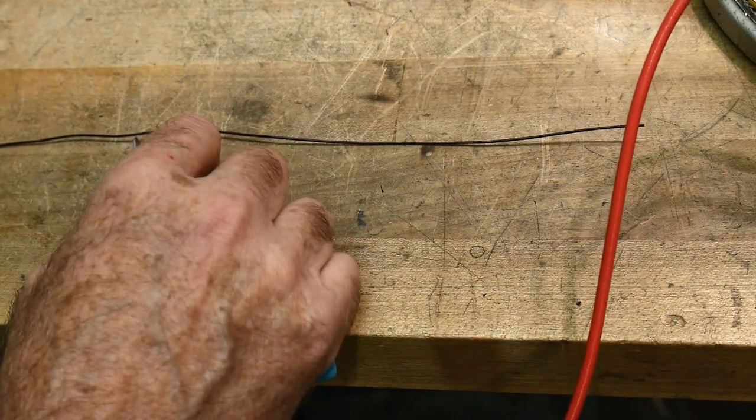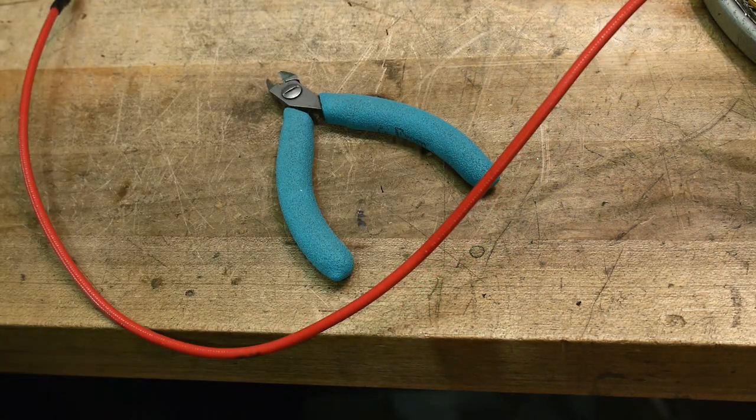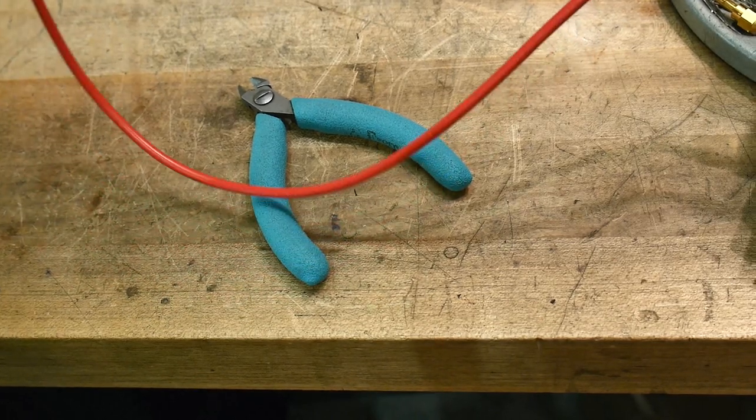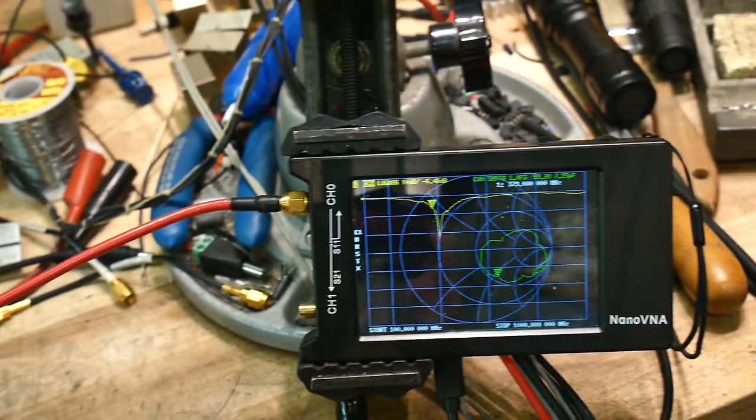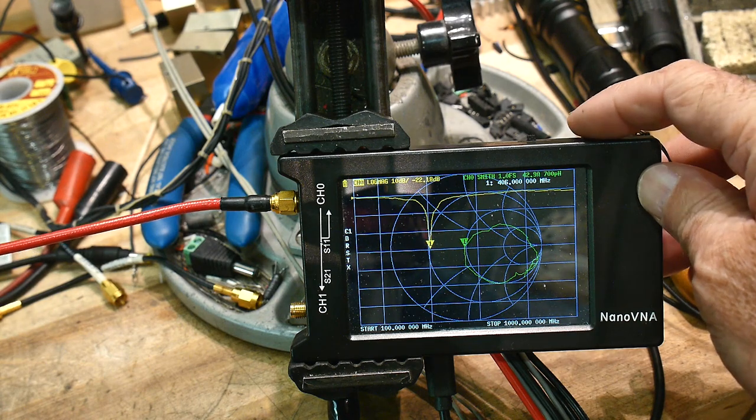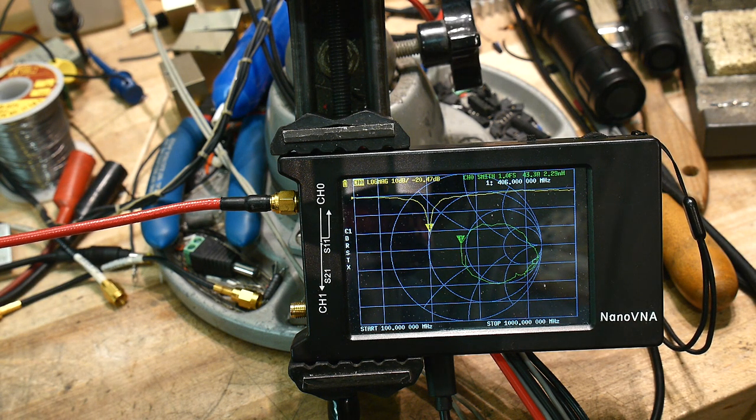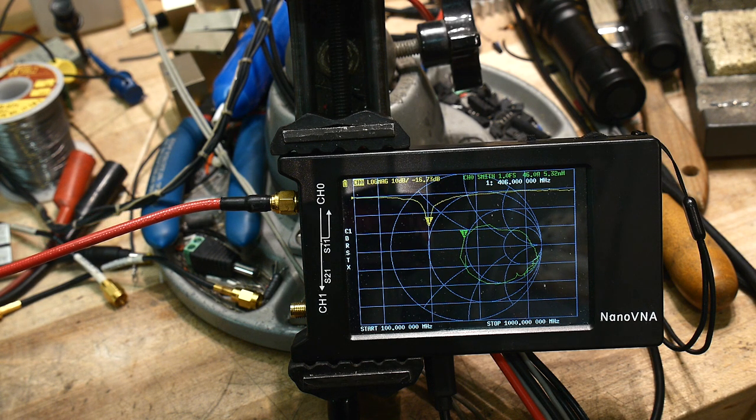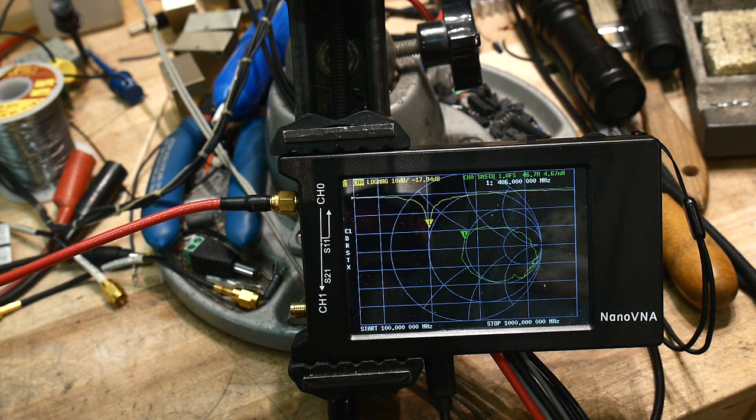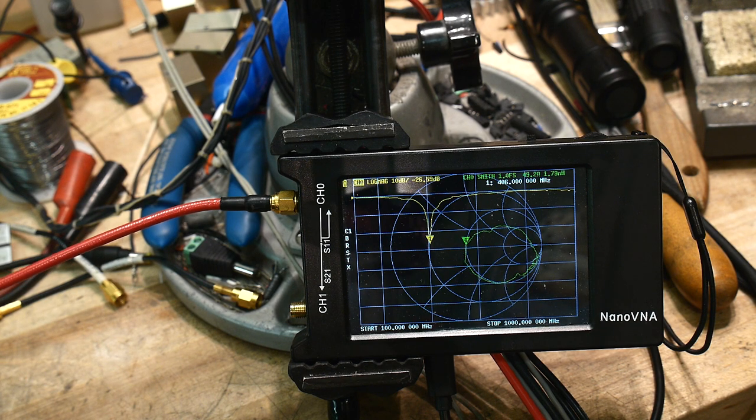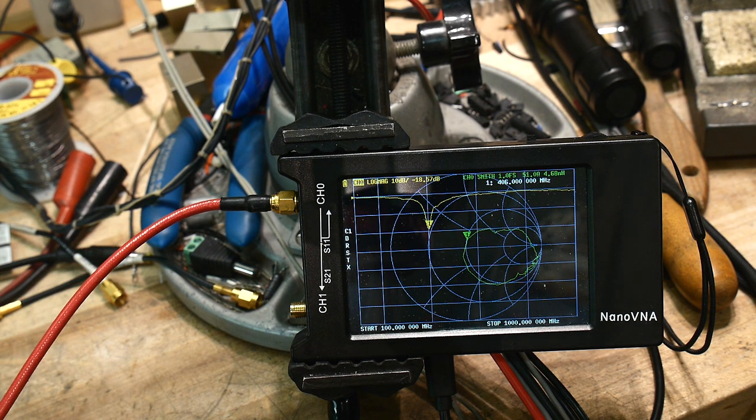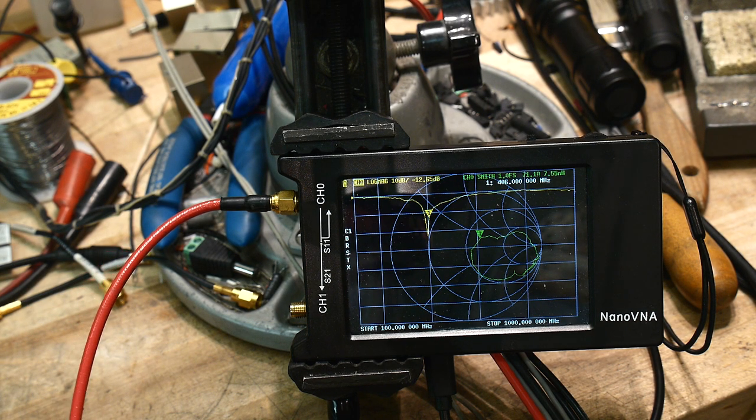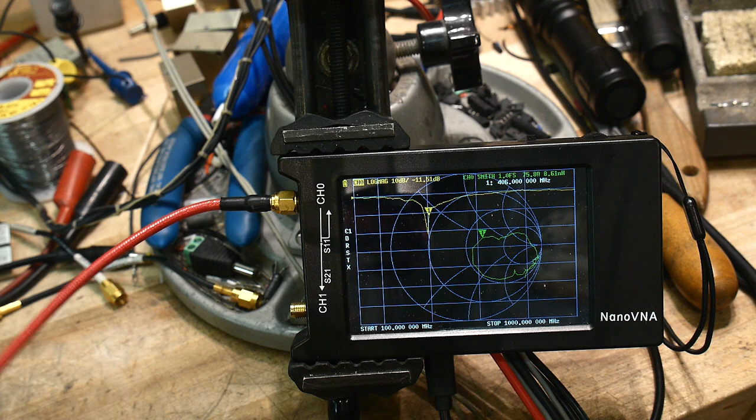And so if we use our nanoVNA, I'll hold it up in the air here. Our nanoVNA now says it's a little longer in frequency or shorter frequency, bigger number. What does it say? 406. So 406 megahertz. And so let's say we want to design an antenna for 500 megahertz. All right. So let's do that. We'll do the math.